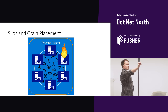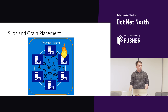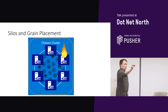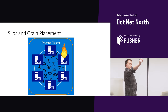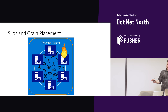If one of our silos were to go down — I don't know, somebody turned it off, somebody spilled water on the server — what will happen is somebody says get me an auction grain. Orleans manages it so that it goes: well that one doesn't exist, so I'll just recreate the grain here on another silo. This is kind of where your idea of activation comes into play.